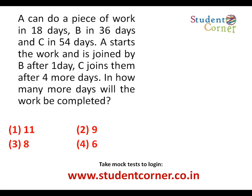Next question: A can do a piece of work in 18 days, B in 36 days, and C in 54 days. The LCM of 18, 36, and 54 is 108, so total work is 108 units. A does 6 units per day, B does 3 units per day, and C does 2 units per day.